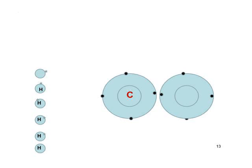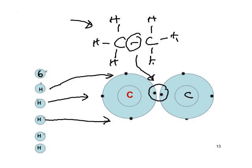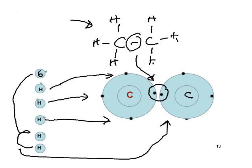This particular covalent bond — the carbon-carbon bond in ethane — isn't on your GCSE course, but let's briefly see how it forms. Two carbon atoms come together, their outer shells overlap, and these two electrons are shared, creating the bond. There are also six hydrogens — three bonding to one carbon and three to the other.